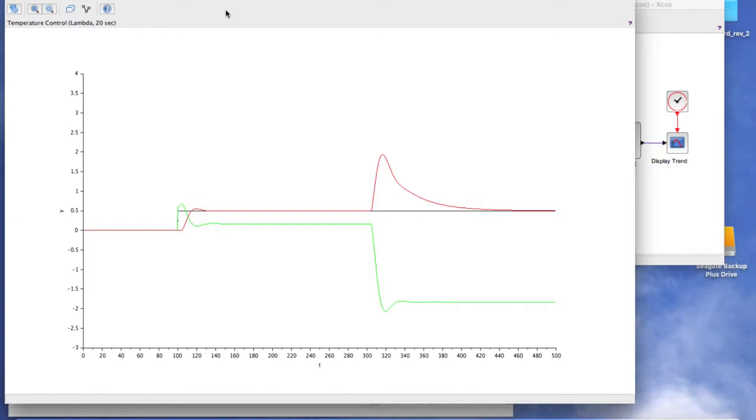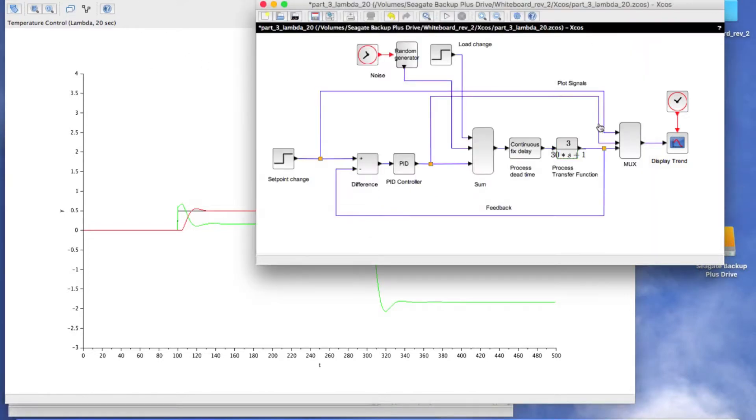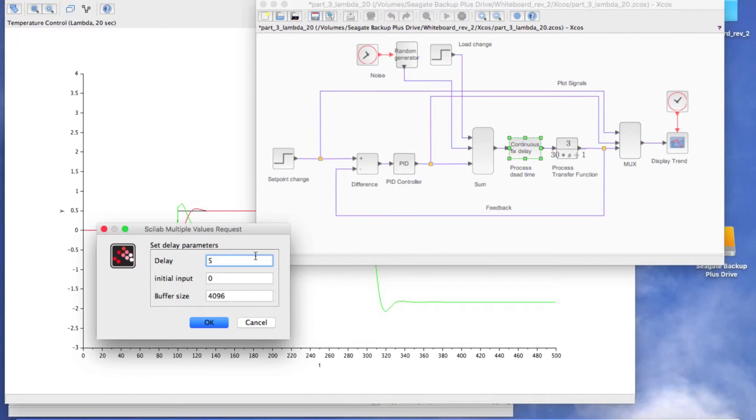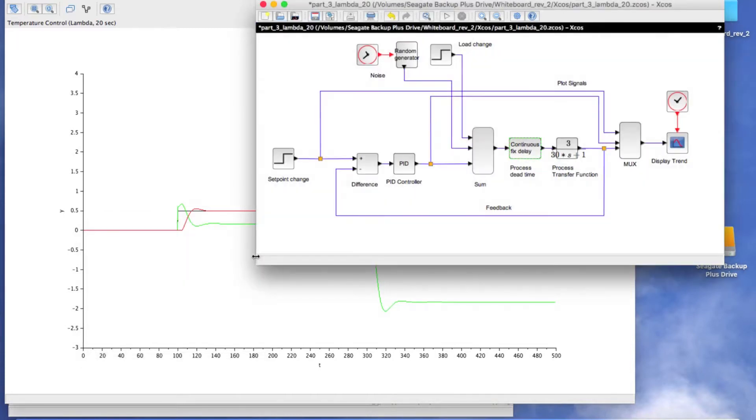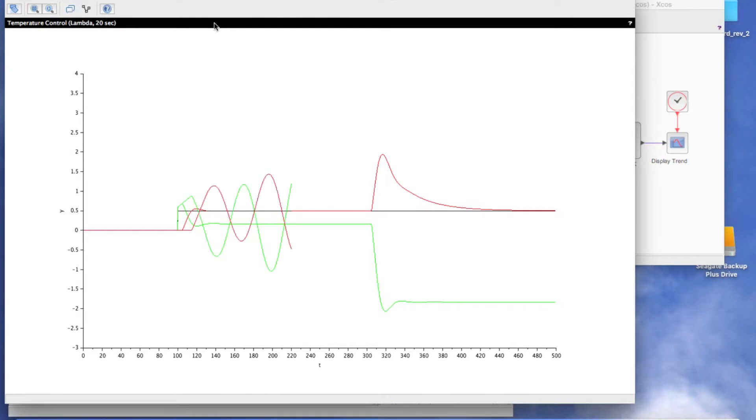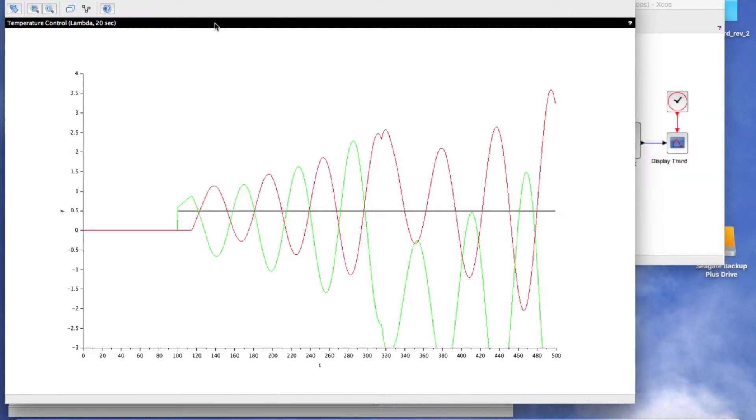But let's increase the time delay. Now the control is unstable. This suggests that a linear valve would only be stable for a relatively narrow range of process flow rates.